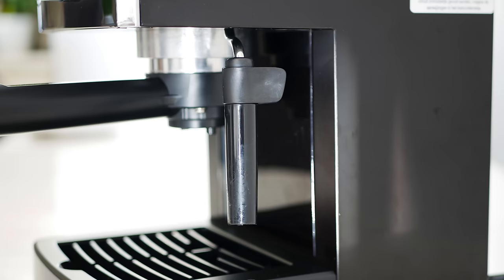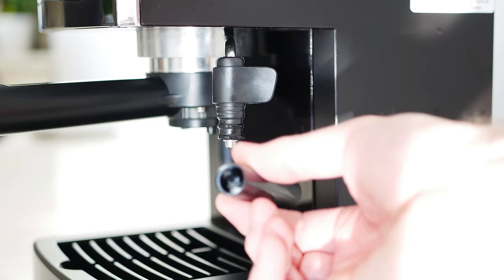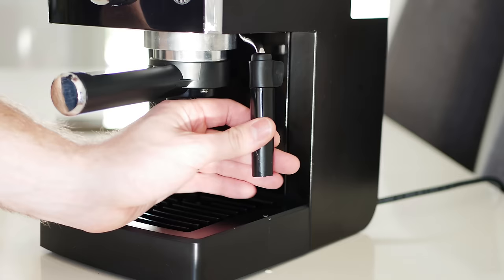The steam pipe has an extension of plastic that makes the steaming for the cappuccino a lot easier. The height is not so big, so use a smaller milk holder.